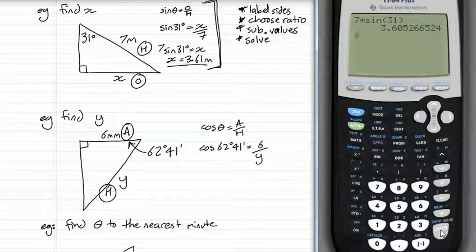When the unknown is on the bottom, there's a couple of ways of thinking about it. Get y up to the top. You can't do anything with divide by y. Which means we're multiplying by y on both sides. I'll put this line just over here a bit. Because you don't really need it. y times cos 62 degrees 41 minutes equals 6.